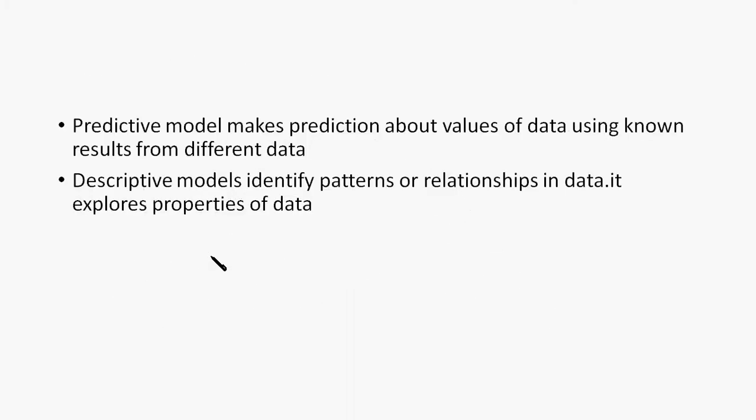Predictive models make predictions about the values of the data using known results from different data — there is training data, that's why we predict the model. Descriptive models identify the properties of the data — there are properties, patterns, and relationships in descriptive models.